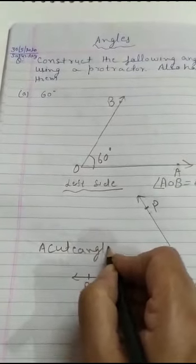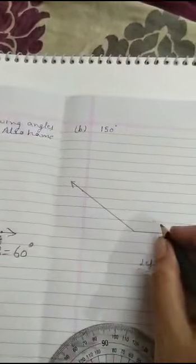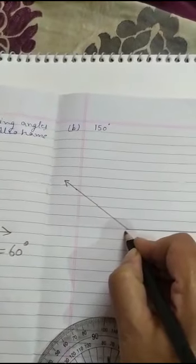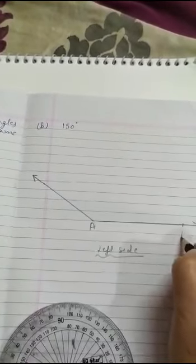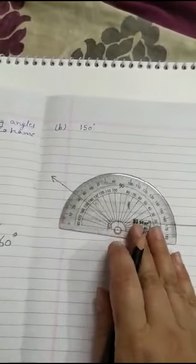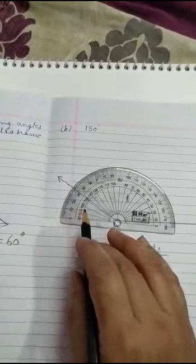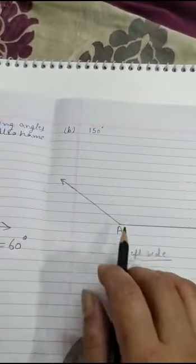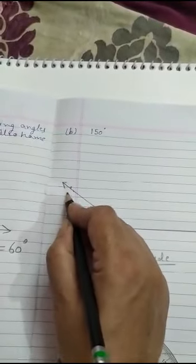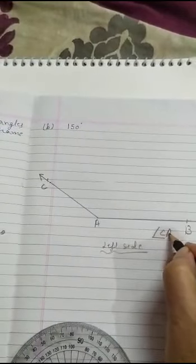Similarly, if we have to make a 150-degree angle, we first made a ray, gave it any name A-B. We gave this ray a name, then we placed the protractor on A. Then if we want to make it from the left-hand side, we'll look inside the inner value, marked 150, joined it and gave it the name C. So what will be our angle? Angle CAB.